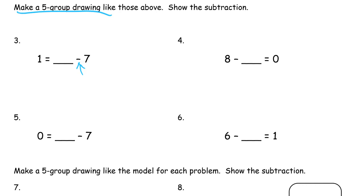Remember from the last homework assignment: look for the subtraction symbol first — the minus sign. Look for that first. It tells you how to read the number sentence, because sometimes the difference between the two numbers is on the left, sometimes on the right. If you start with the subtraction symbol first, you'll know: this is how much I subtracted, this is how much I had before, and this is what's left after.